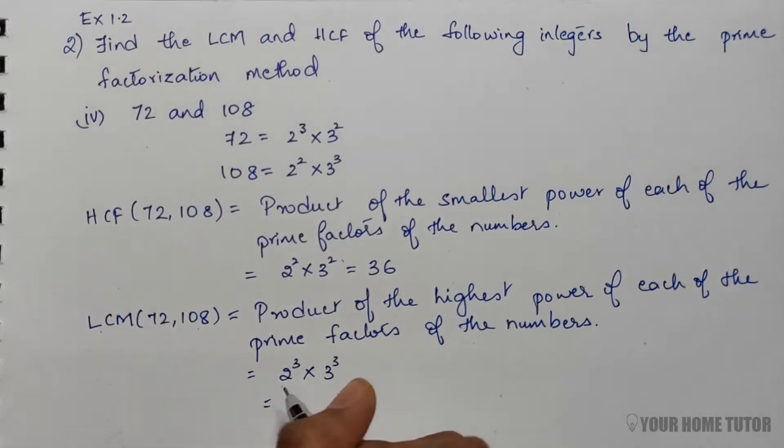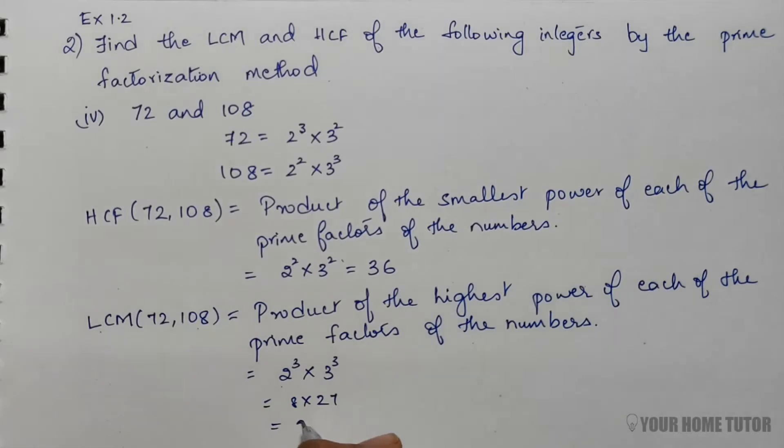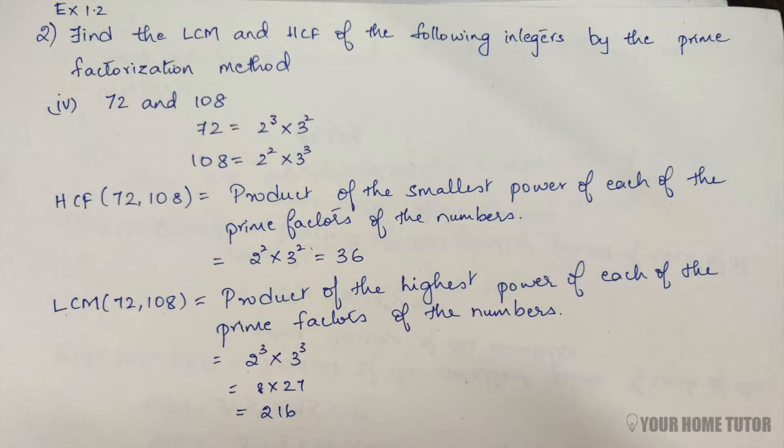So that is 8 × 27, which equals 216. Take a screenshot or download the solution link from the description box below.